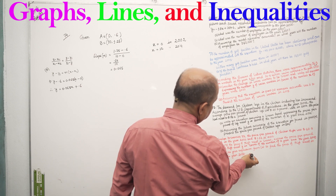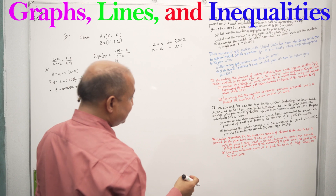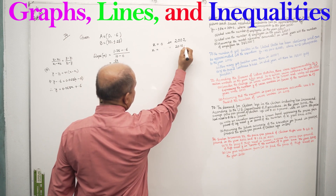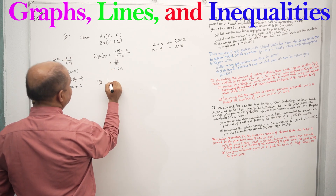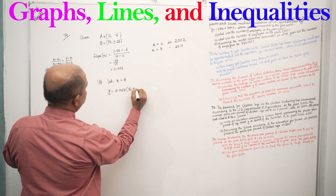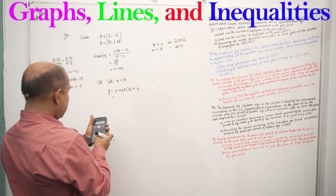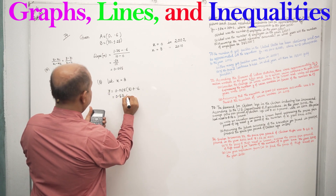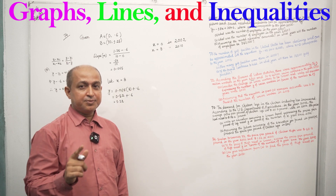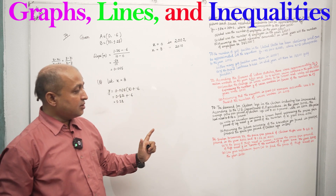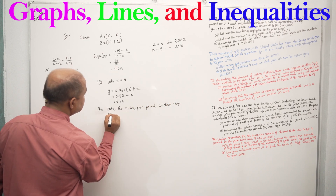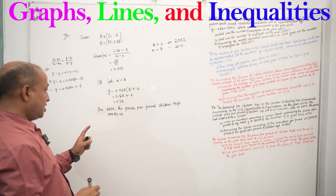For part B, use the expression from part A to find the price of chicken thigh in the year 2010. X equals 8 in 2010 since base year is 2002. So Y equals 0.065 times 8 plus 0.6, equals 0.52 plus 0.6, equals 1.12. In 2010, the price per pound of chicken thigh was $1.12.